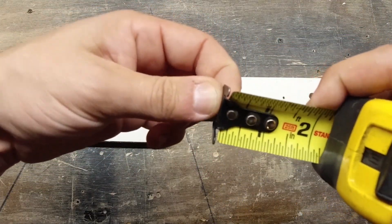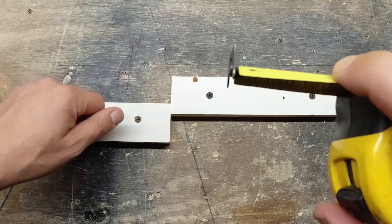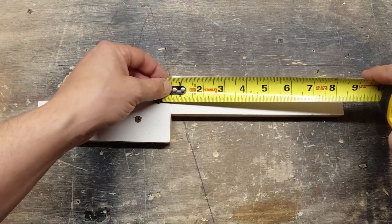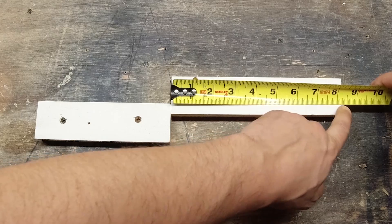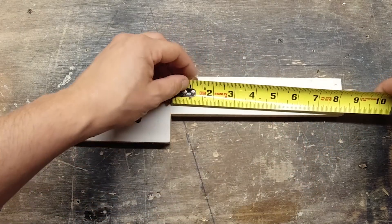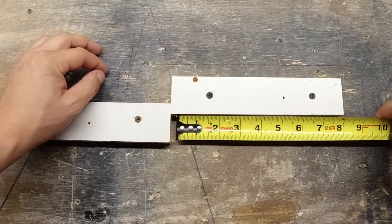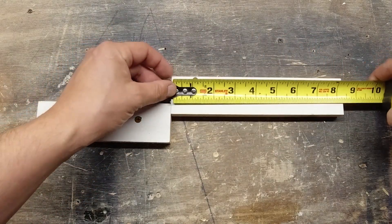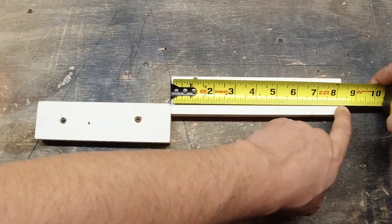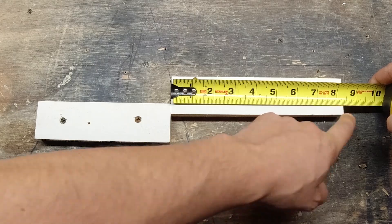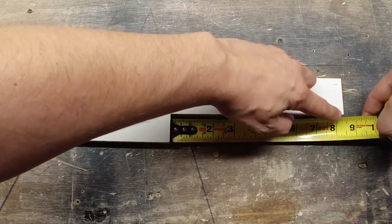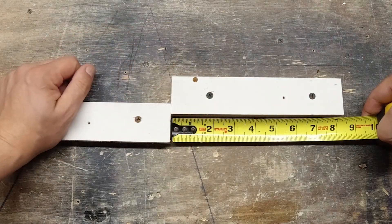The reason the end of the tape measure moves like this is for accuracy and it allows you to hook on to something, take a measurement, and that measurement is going to be the same as if you were to butt up to something and take that same measurement. So you measure here and you see that this is 8 and 5 sixteenths, and you butt here, measure the same distance, 8 and 5 sixteenths exactly.